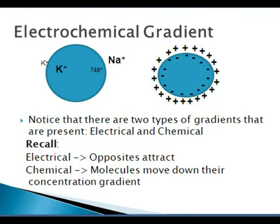The next topic we will be discussing is the electrochemical gradient that is set up by all of these processes. Notice that there are two types of gradients present: one electrical and one chemical. Recall from your science classes that opposite charges attract, and that molecules will move down their concentration gradient from an area of high concentration to an area of low concentration.